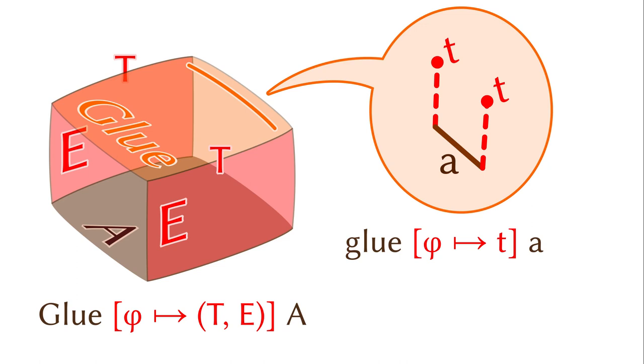The glue constructor takes two arguments: the partial element in T under the constraint phi, and the total element in the bottom type that agrees with the image of the partial element, judgmentally.